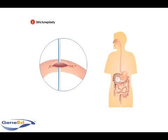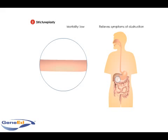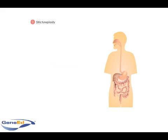Instead, the intestine is cut lengthwise at any spot where there is an obstruction, then closed in the opposite direction. Strictureplasty has a very low operative mortality and relieves the symptoms of obstruction in many patients.